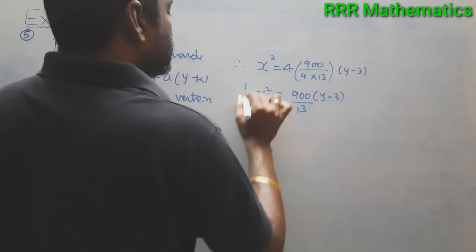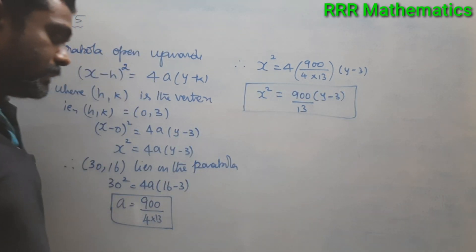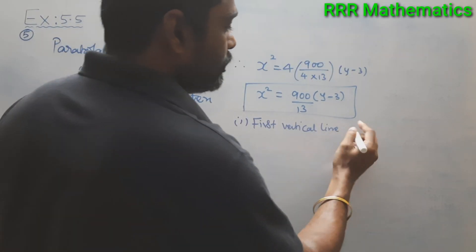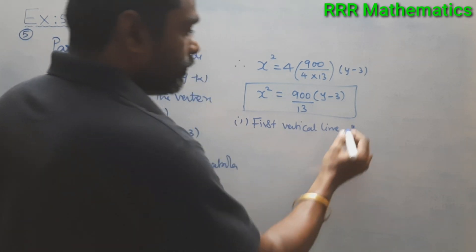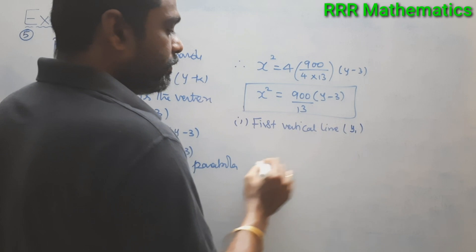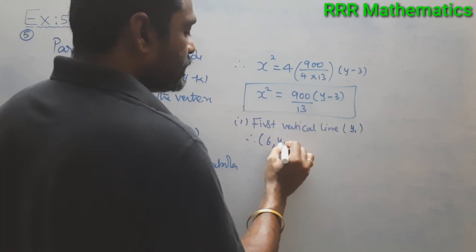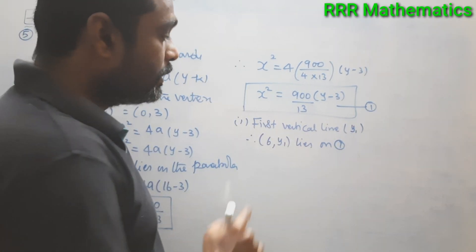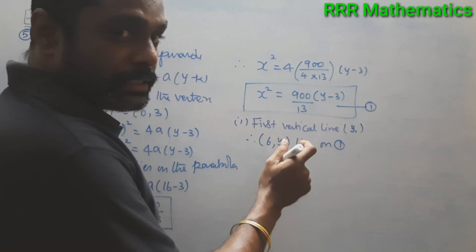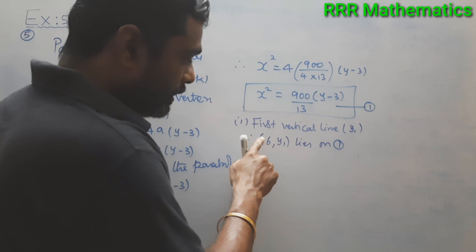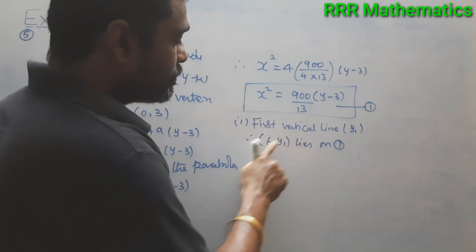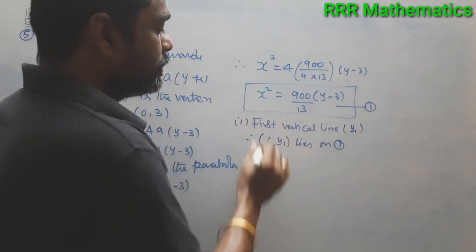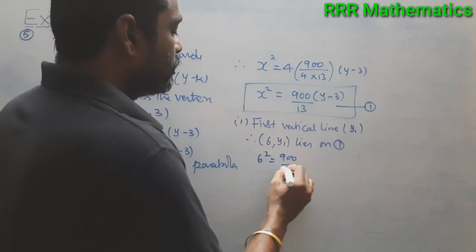Substituting the value of a back into the equation: x² = (900/13)(y − 3). This is the exact equation of the parabola. Now we want the length of the first vertical cable. Its horizontal distance from the vertex is 6 meters, so the point (6, y₁) lies on the parabola. I substitute x = 6 into the equation.